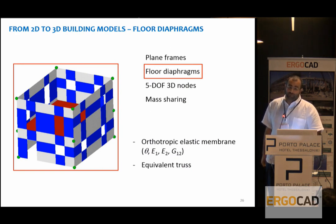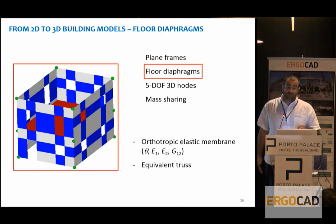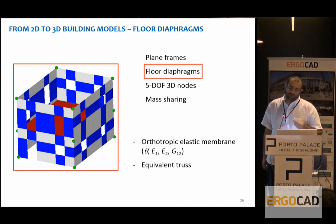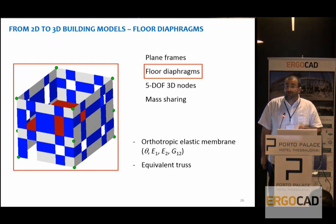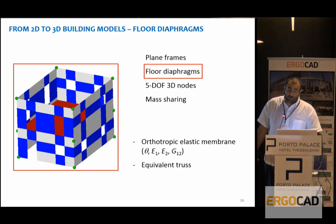After defining our walls and equivalent frames, we need to think about diaphragms. It is very important to understand how stiff diaphragms are — how effectively they can connect parallel walls and also transverse walls compared to the direction of analysis. In Tremuri, diaphragms are modeled as orthotropic elastic membranes. We define three of the four parameters: the two elastic moduli and the shear modulus. Other modeling techniques may include equivalent trusses for diaphragms, which would allow capturing nonlinear behavior, but this depends on the type of modeling the engineer wants to carry out.